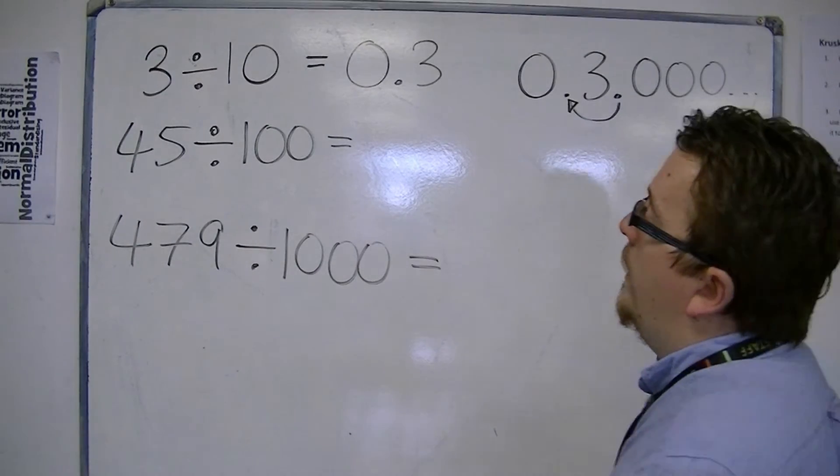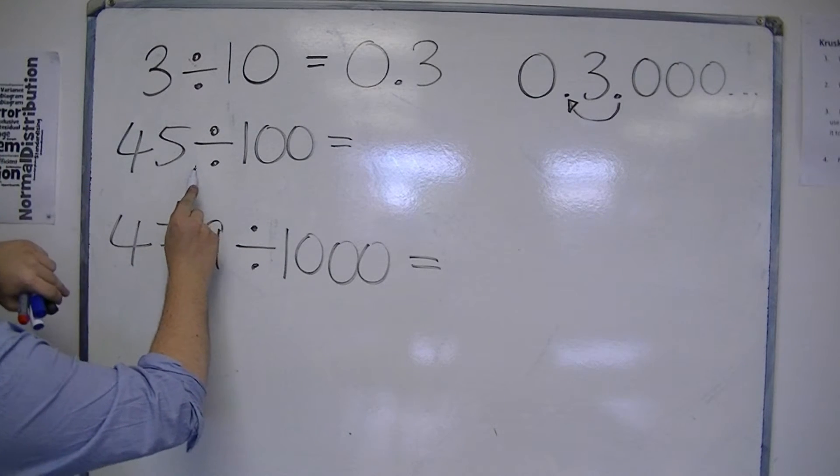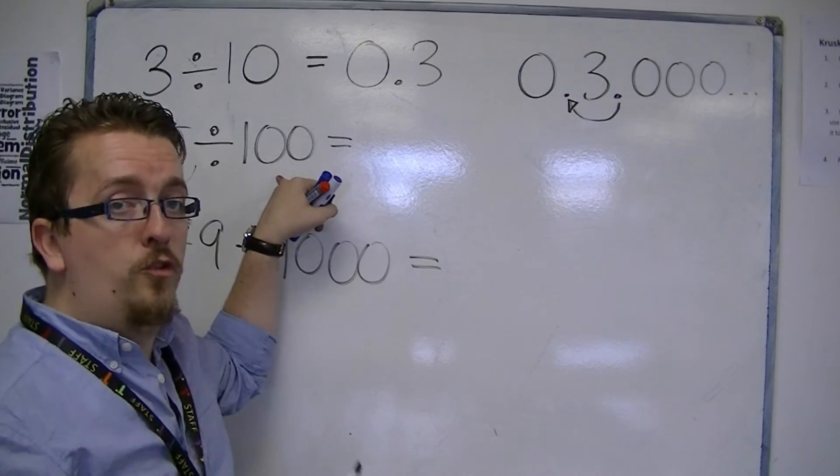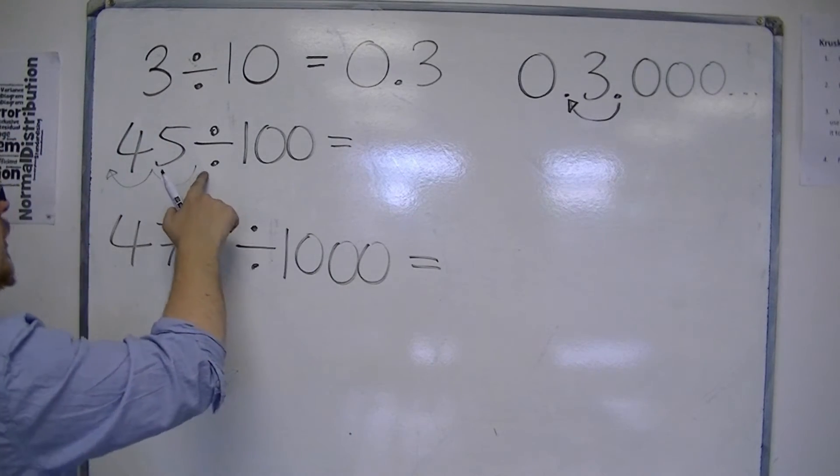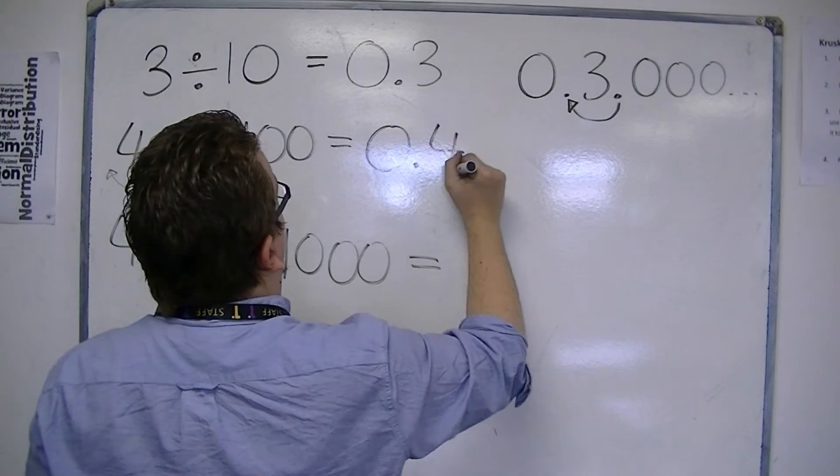45 divided by 100 works in a similar way. The decimal point is here, and would get moved twice to the left, because you're dealing with 100, with two zeros, two steps to the left. So, we have 0.45.